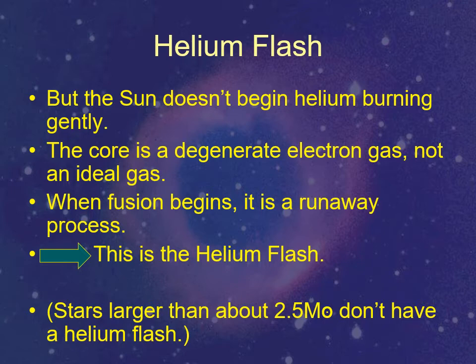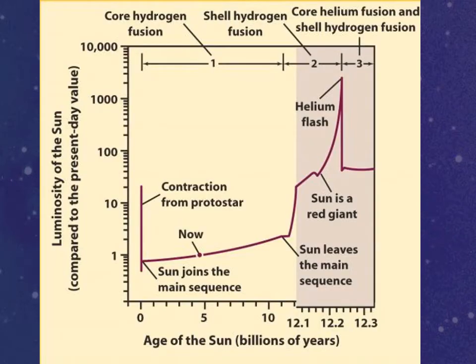Stars around 10 solar masses do this more gently, gradually starting helium fusion. Stars around 2.5 solar masses also don't have a helium flash because there's so much gravitational energy to begin with — the core is so hot it doesn't become truly degenerate. It's a dead core but not a degenerate dead core, so it just starts fusing. For the Sun, it fuses like crazy, and eventually all that energy is enough to push things apart, so it quits being a degenerate system and temporarily becomes a normal ideal gas.